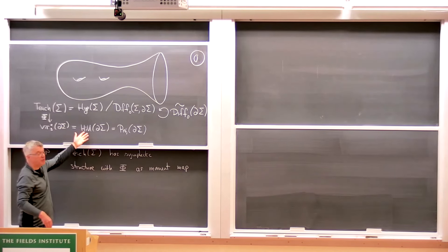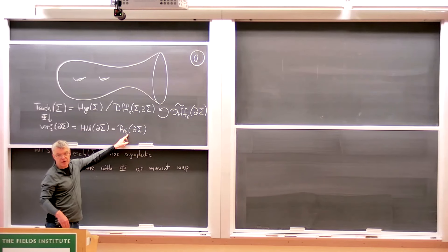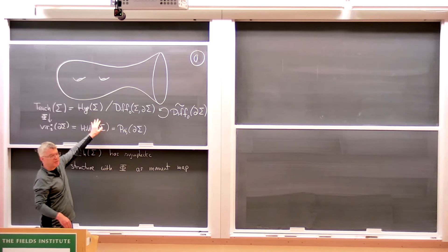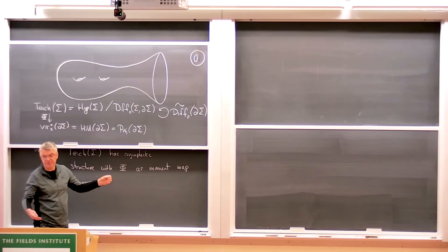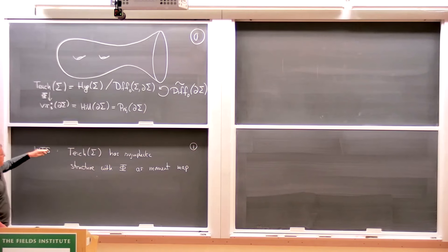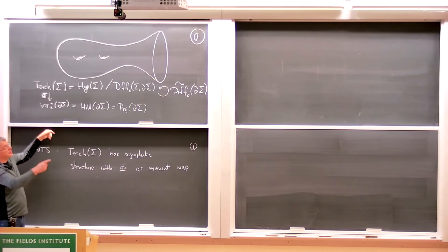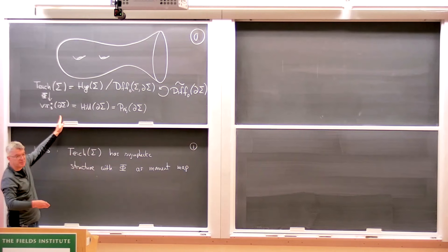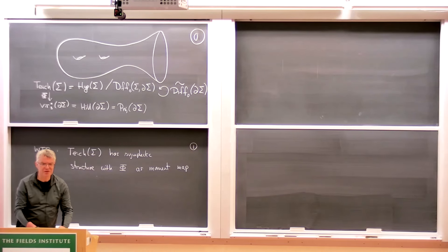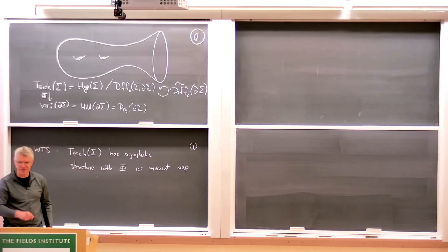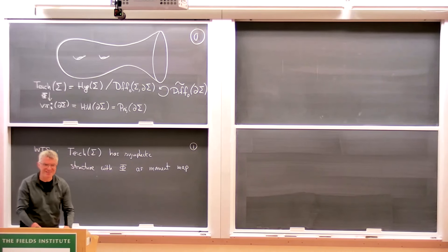There's a natural map from the space to the dual of the Virasoro algebra at level one, which by definition is the space of Hill operators on the boundary — something I discussed in the first lecture. In the second lecture, I explained that the space of Hill operators can also be identified with the space of projective structures on the boundary. From that perspective it's easy to see how this map goes. I want to explain that this infinite dimensional Teichmüller space has a natural symplectic structure with this map phi as a moment map, making it a Hamiltonian Virasoro space.